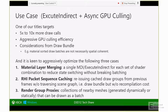For example, in UE4, your draw call batch is not necessarily spatially coherent. So if you group things spatially, that doesn't necessarily mean you'll have very good culling efficiency. You may end up with a large portion of the draw calls in that bundle not contributing to screen pixels at all.